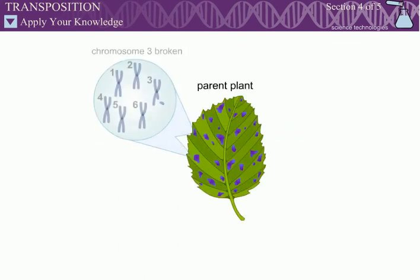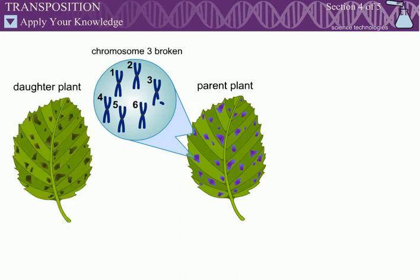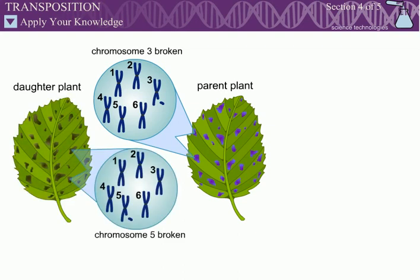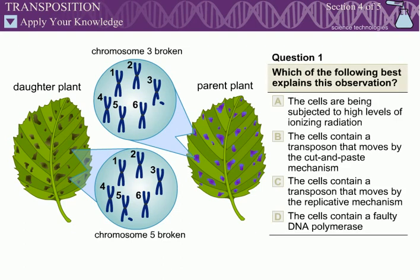The cells of a certain plant experience broken chromosomes very frequently. In the parent plant, the chromosomes tend to break at a specific location in chromosome 3. The offspring of this plant also tend to experience broken chromosomes very frequently, but they do so at a different location in a different chromosome. Question 1: Which of the following best explains this observation?